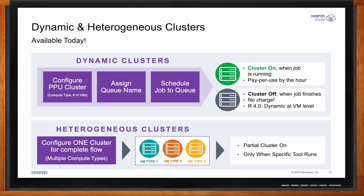We also released capabilities for creating heterogeneous clusters. For a complex chip design flow with multiple tools, different tools are optimized for different types of compute VMs — you can create a heterogeneous cluster with multiple different VM types. Once a complex flow is submitted to this cluster, the system ensures only the VM type needed and optimized for that specific tool is running. When that job finishes and the flow moves to the next tool, the next VM type optimized for that tool turns on and the earlier VM turns off automatically. This automation helps chip designers stop worrying about infrastructure costs and focus completely on building and running complex flows.